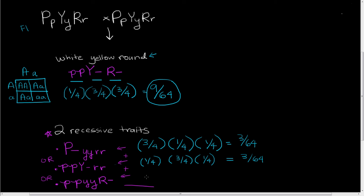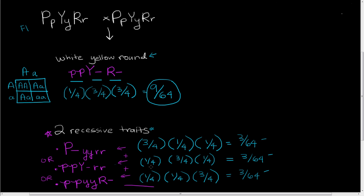For the last combination — two little p's, two little y's, and at least one big R — the probability is one-fourth times one-fourth times three-fourths, which also gives three sixty-fourths. Since we can get any one of these three genotypes to satisfy our requirement of having exactly two recessive traits, we add them together: three sixty-fourths plus three sixty-fourths plus three sixty-fourths equals nine sixty-fourths.